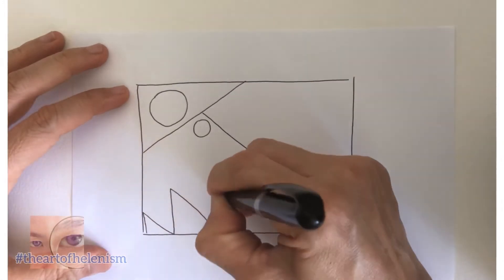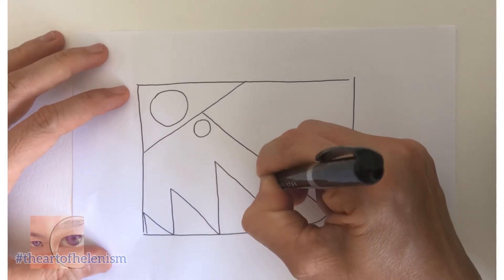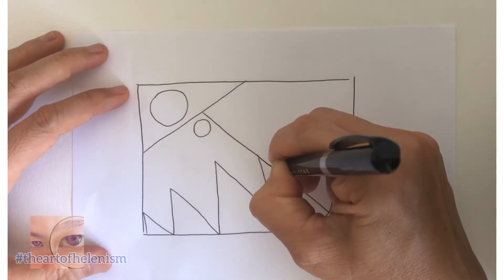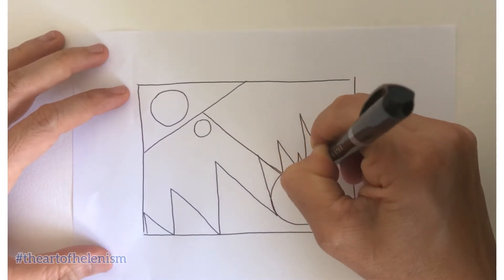Now draw a zigzag line across the box. Anywhere in the box. Any size, any length. It doesn't matter.